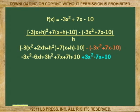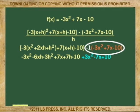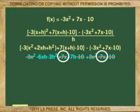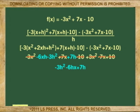If we now combine the second part of the numerator with what we have expanded — notice that this trinomial gets multiplied by negative 1 — we get a polynomial where we can cancel common terms. The 3x squared, the 7x, and the tens get cancelled, leaving behind negative 3h squared minus 6hx plus 7h, all of it divided by h.